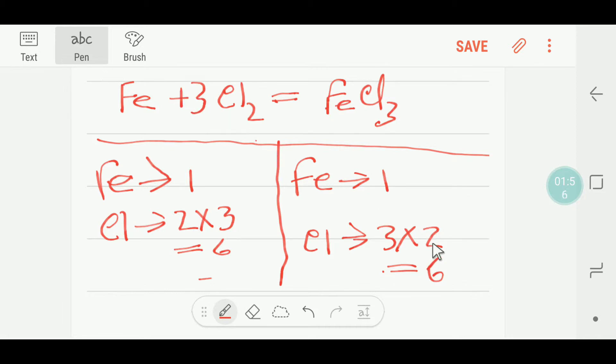And again if I multiply here by two, then these two will come before this chlorine. So I have to update my iron. Here I am getting two iron.